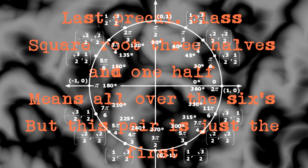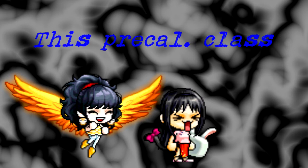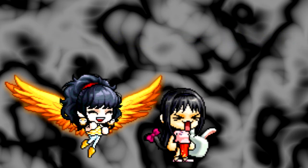Square with three halves and one half means all over these sixes, but this power is just the first. Last precal class, I think there's six more pairs. There's no way we're gonna stop. Half, half, half, half.